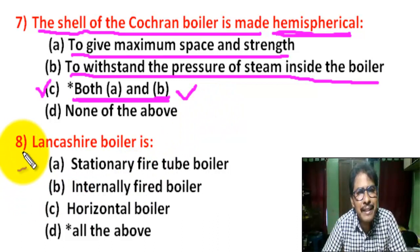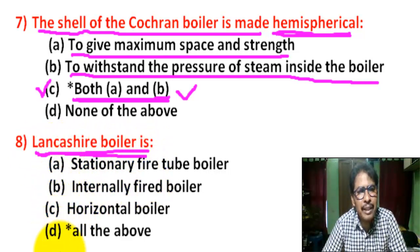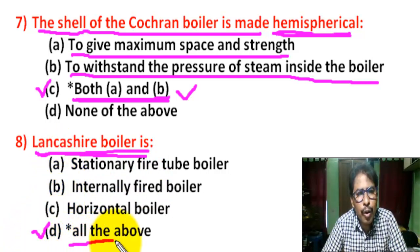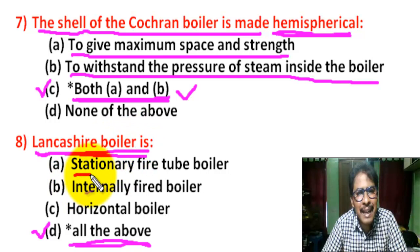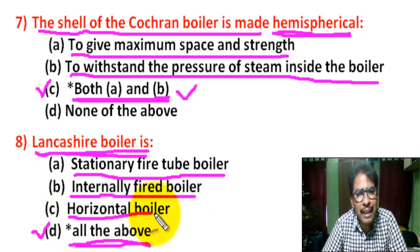Question number 8: Lancaster boiler — there are four options. Correct answer is D: all of the above. Lancaster boiler is a stationary fire tube boiler, it is an internally fired boiler, and it is a horizontal boiler. So correct answer is D: all of the above.